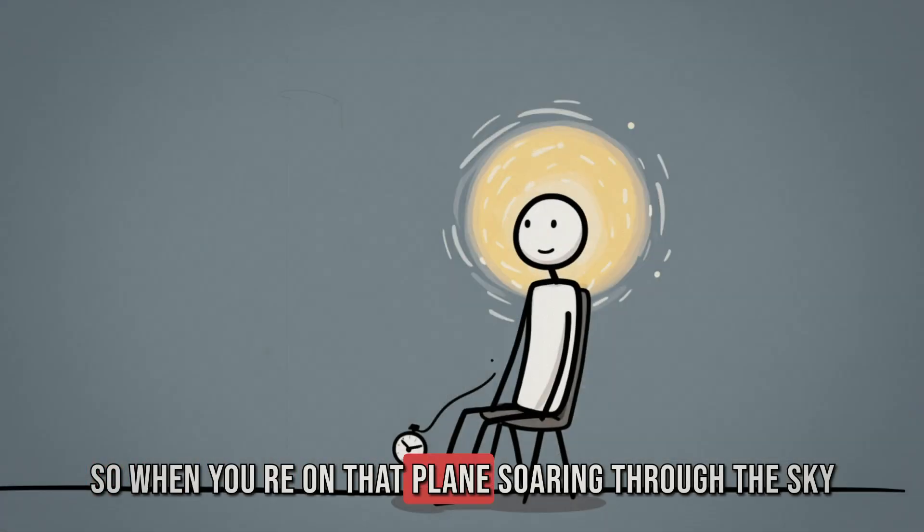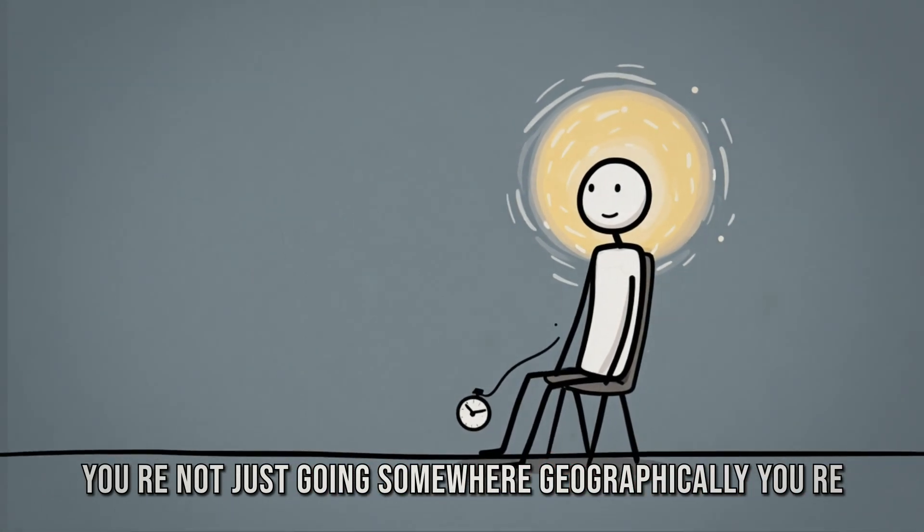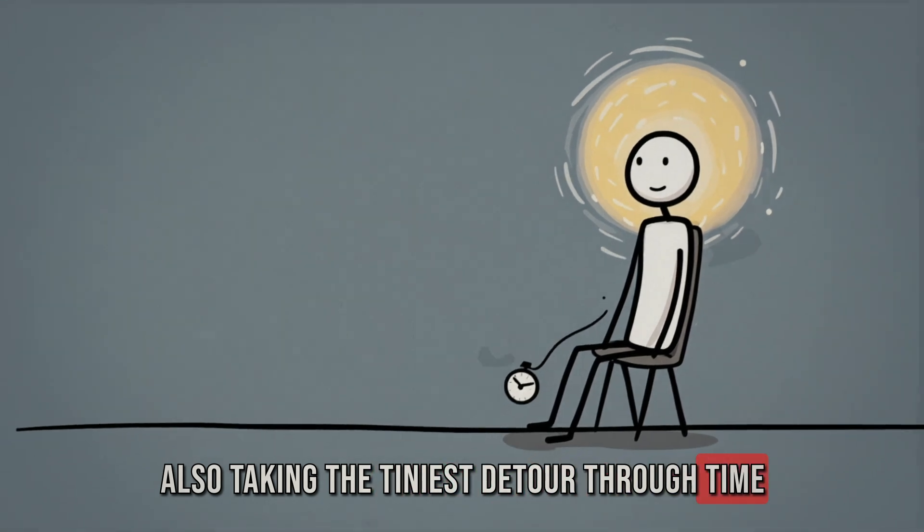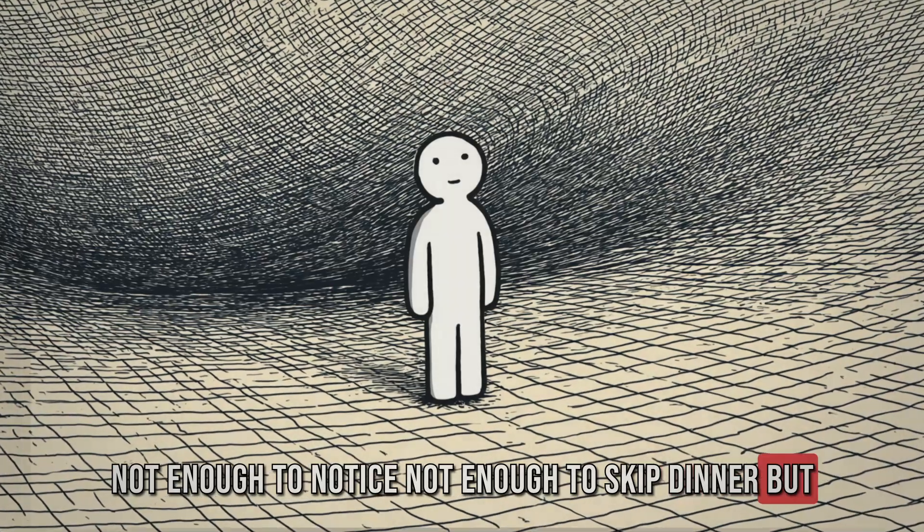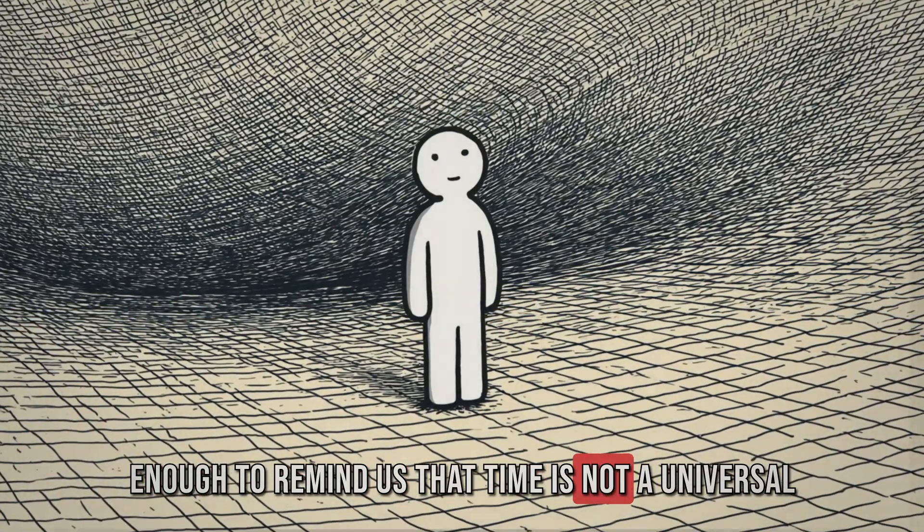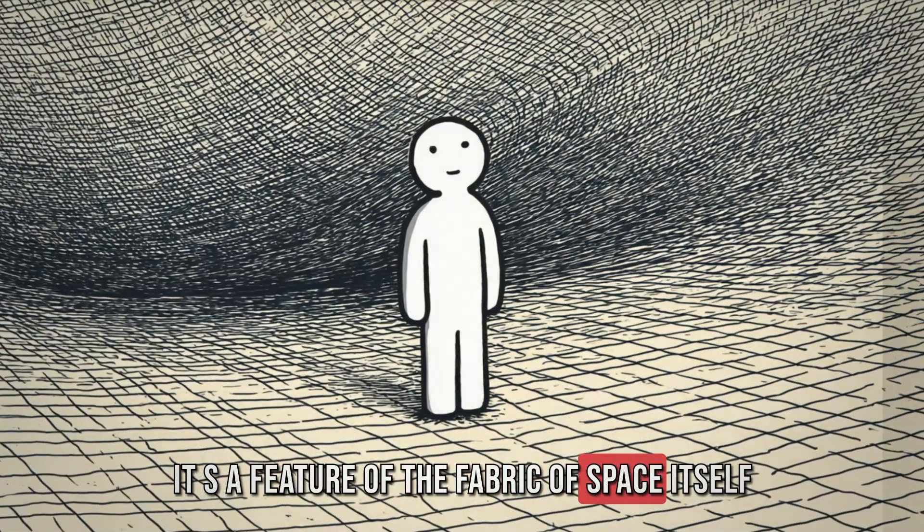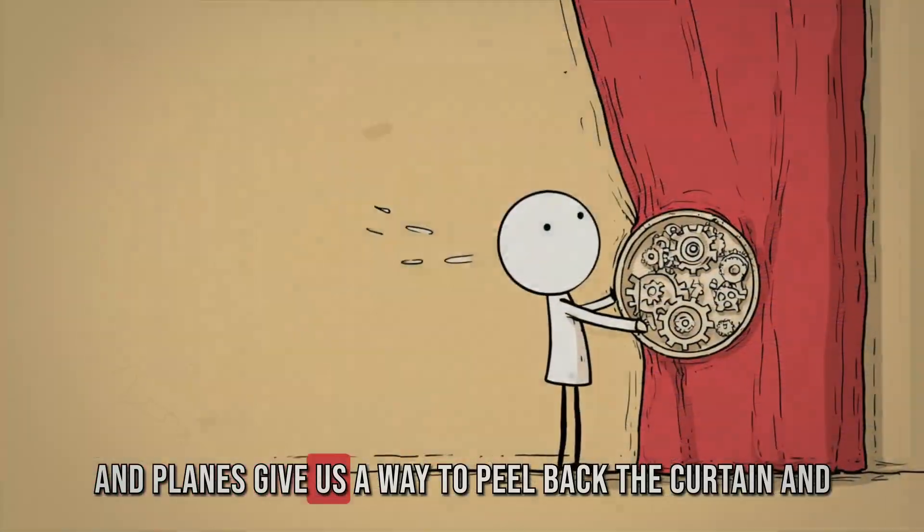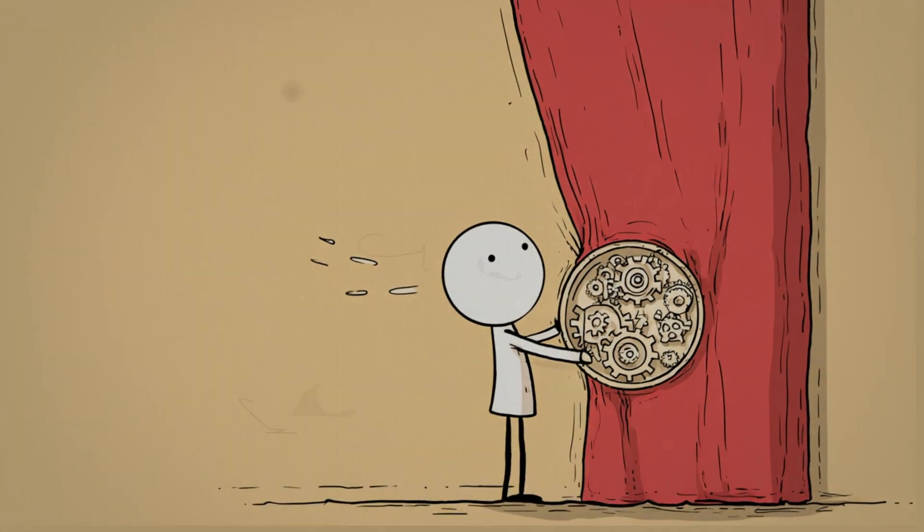But enough to prove that time had literally ticked slower for the clock in motion. So when you're on that plane soaring through the sky, you're not just going somewhere geographically. You're also taking the tiniest detour through time. Not enough to notice, not enough to skip dinner, but enough to remind us that time is not a universal constant. It's a feature of the fabric of space itself. And planes give us a way to peel back the curtain and glimpse how it actually works.